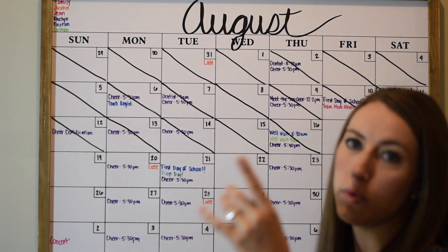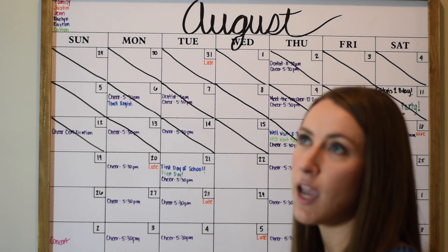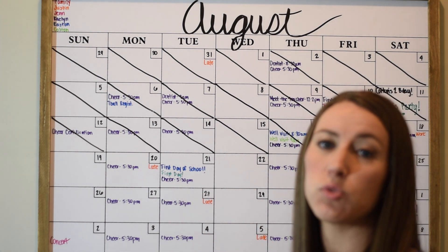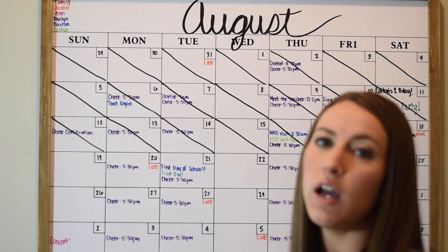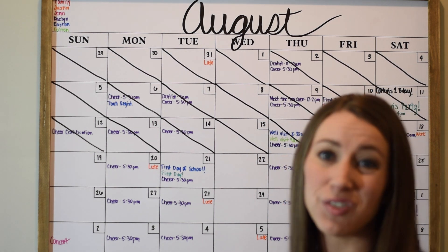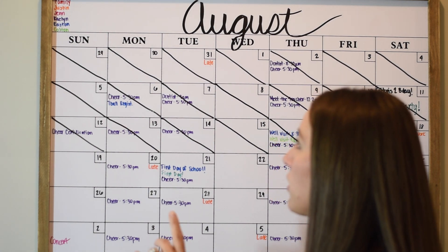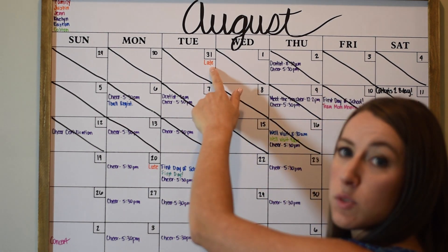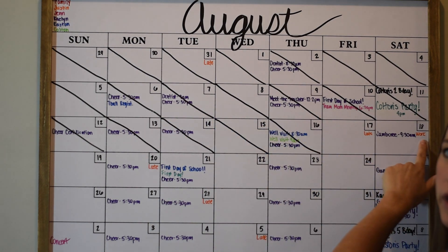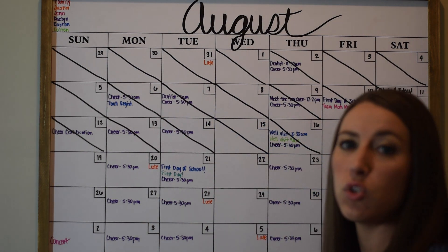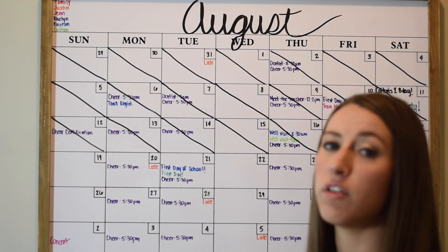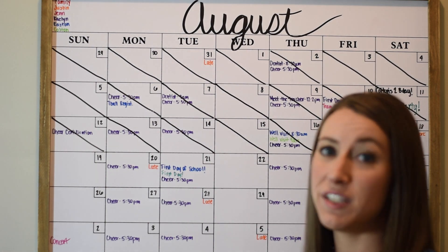My husband has pretty much a set work schedule, but there are some evenings he has to work late and he has to work a Saturday maybe every six weeks or so. I do write on there when my husband has to work late and when he has to work Saturdays, just to help plan and keep everyone in the family aware of when daddy's working.